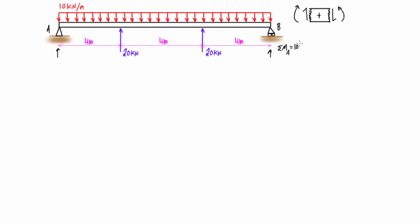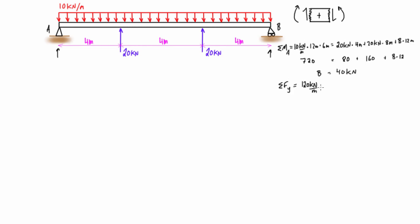You can do this by solving the sum of moments about A and then doing the force balance in the y direction, or you could notice that this problem is symmetrical about the center of the beam. We can take the sum of all forces pressing down minus the forces pressing up and distribute that to each reaction. So 10 kilonewtons per meter times 12 is 120 kilonewtons pressing down, we have 40 pressing up, leaving 80, which gives us 40 into each reaction.